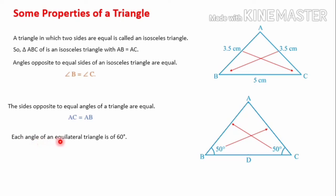Each angle of an equilateral triangle is 60 degrees. An equilateral triangle has all three sides equal, which means all three angles are also equal. Using the angle sum property — the sum of angles in a triangle is 180 degrees — dividing equally among three angles gives 60 degrees each. So 60 times 3 is 180. Each angle of an equilateral triangle is 60 degrees.